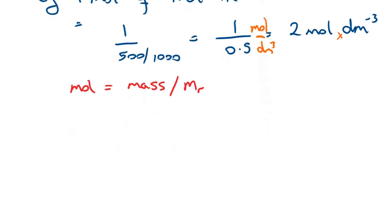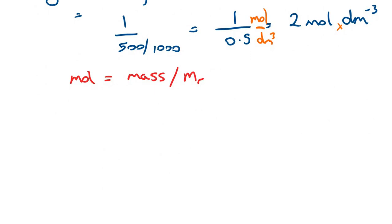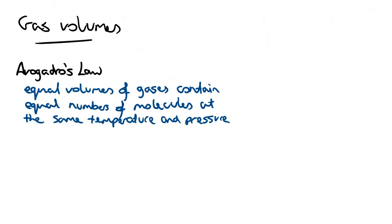The next thing we're going to talk about is gas volumes. In order to do that we need to look at the kinetic theory of gases. This basically says that we treat all gas particles the same — effectively like snooker balls; they just bounce off each other. Gas particles move randomly and collide against each other and the walls of the container. We don't really take into account any attractive or repulsive forces for now. So now we're going to talk about Avogadro's law, which basically states that equal volumes of gases contain equal numbers of molecules at the same temperature and pressure. This makes our calculations involving gases fairly straightforward.